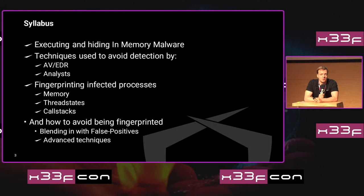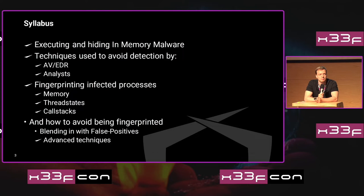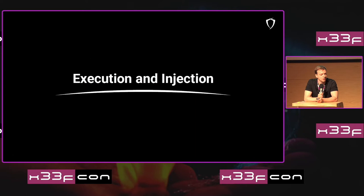This talk is about the execution and the hiding of malware in the context of another process. We will be taking a look at techniques which are typically used by adversaries to avoid detection either by security products or by analysts manually looking at processes which might be infected. We will be trying to fingerprint infected processes simply by looking at the memory, the states of certain threads, and by taking a look at the call stack of certain threads.